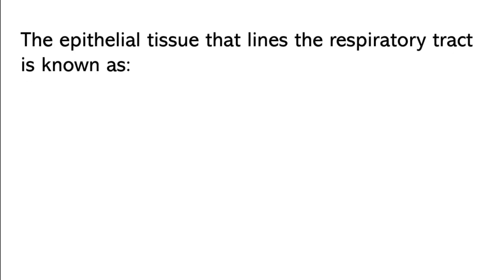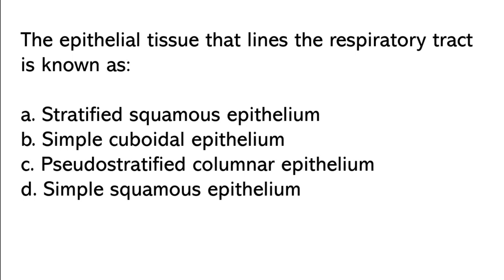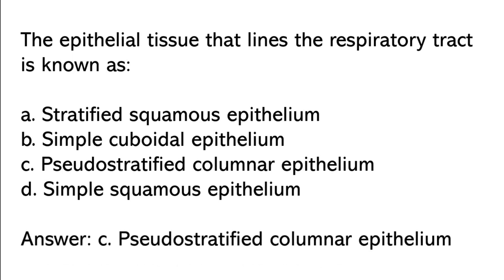The epithelial tissue that lines the respiratory tract is known as: stratified squamous epithelium, simple cuboidal epithelium, pseudostratified columnar epithelium, simple squamous epithelium. So the correct answer is option C: Pseudostratified columnar epithelium.